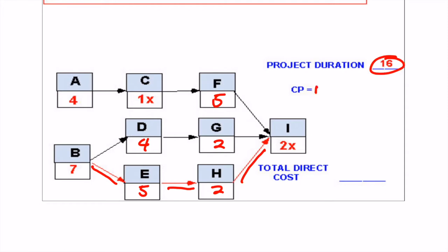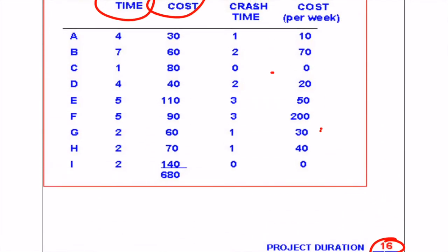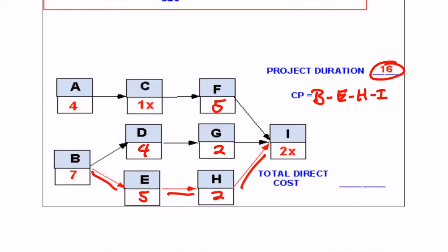The project duration is going to be 16, and our critical path is going to be B, E, H, and I. Now, our total cost at this time has already been added up from our normal costs, and so that is going to be $680.